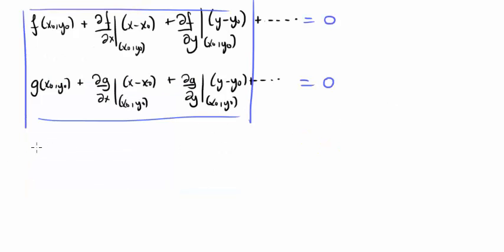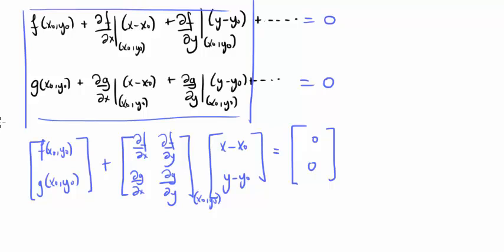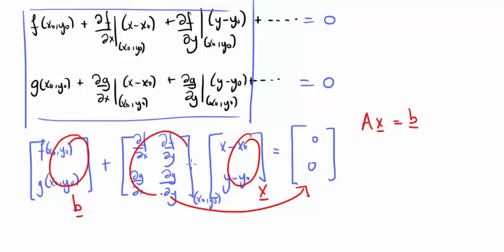We can write this system in matrix form. By bringing the second term over to this side, we can see that we have a system of the form ax equals to b, where the constant array here is b. The vector x minus x0, y minus y0 is what we've called x, and the negative of this array here is what we've called a.